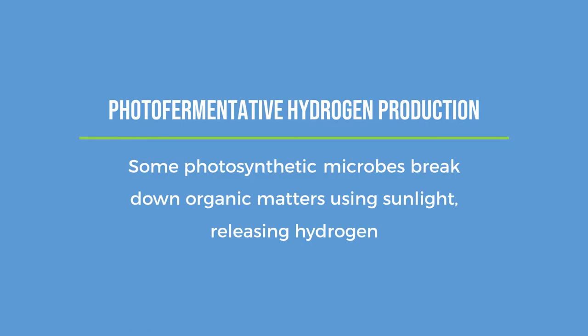Some photosynthetic microbes break down organic matter using sunlight, releasing hydrogen. This method is also known as photofermentative hydrogen production.